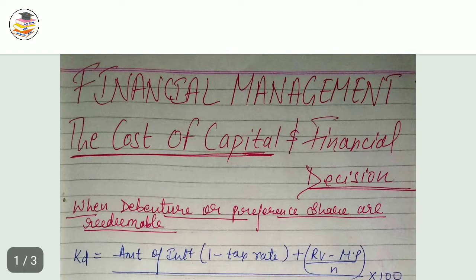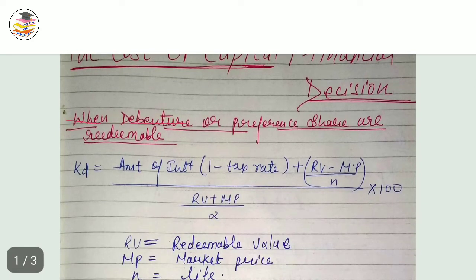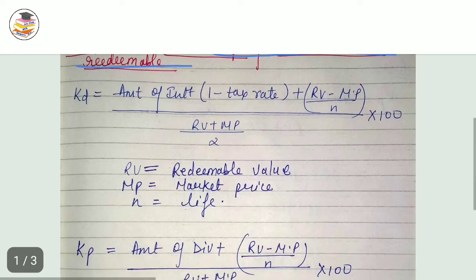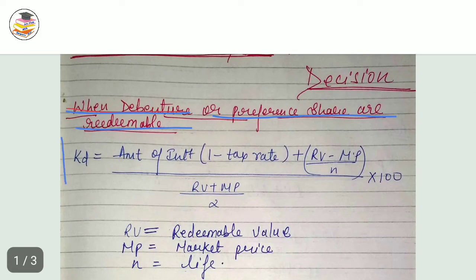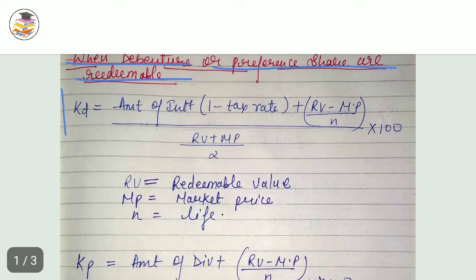Let's start with the video. Now, when debentures or preferential shares are of redeemable nature, what will be the formula of cost of debt when debentures are redeemable?